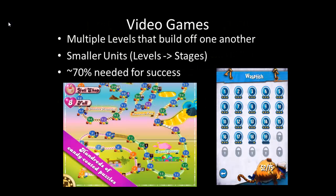These same ideas are shown in video games. Games also have multiple levels that build off one another in small units called stages. Looking at Candy Crush, for example, we can see there are 39 or 40 levels, which we call stages — the Candy Factory levels, the Lemonade Lake levels, the Chocolate Mountain levels — each with their own individual lessons. These smaller units are the levels and stages.